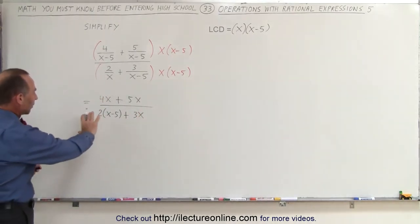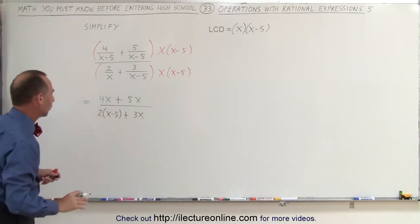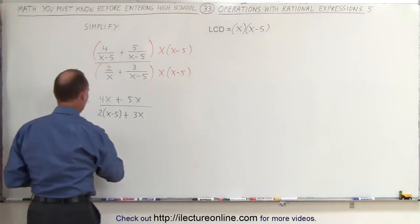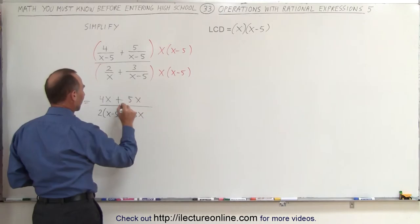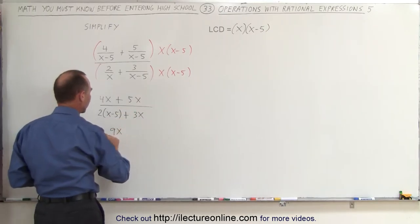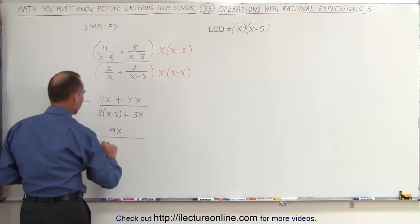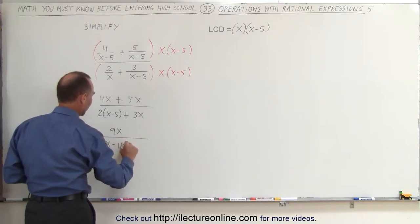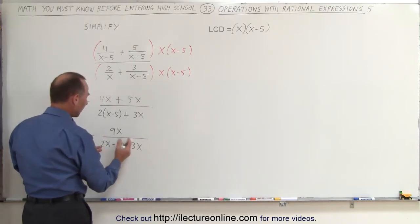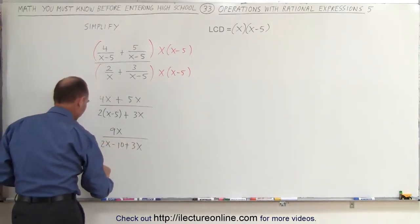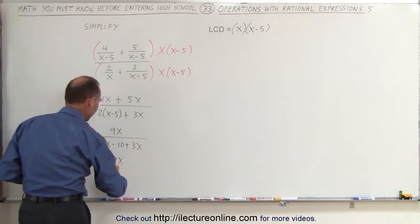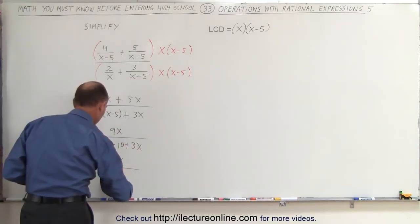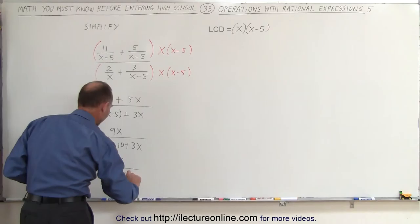Now we just have to simplify what's in the denominator by multiplying out what we have there. So this becomes equal to 4x plus 5x becomes 9x in the numerator, divided by 2 times x minus 10 plus 3x, and then we combine like terms in the denominator, so this becomes 9x divided by 2 plus 3 is 5x minus 10.